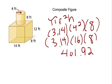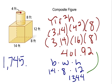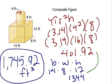Then we find the rectangular prism, which is base times width times height: 14 times 8 times 12 equals 1,344. Because it's a composite shape, we add the two volumes together: 401.92 plus 1,344 equals 1,745.92. The unit is feet cubed, so the answer for this composite figure is 1,745.92 cubic feet.